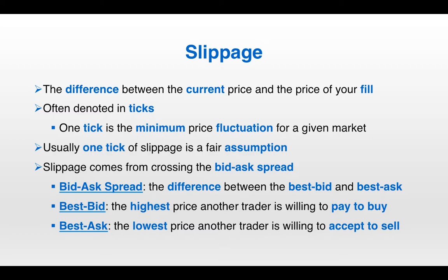Slippage comes from crossing the bid-ask spread, which is the difference between the best bid and the best ask. The best bid is the highest price another trader is willing to pay to buy, and the best ask is the lowest price another trader is willing to accept to sell. We'll have a visual later on depicting the order book with the best bid, the best ask, and the bid-ask spread.